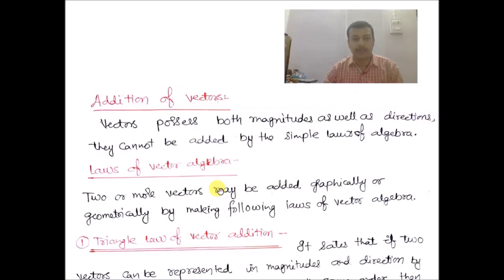We have learned about the definitions of vectors as well as different types of vectors, and already mentioned that vectors cannot be added, subtracted, multiplied, or divided by simple algebraic laws of mathematics. So in this video, we are going to study about the addition of vectors, subtraction of vectors, what are unit vectors, and the different types of laws related to addition of vectors and their analytical treatments.